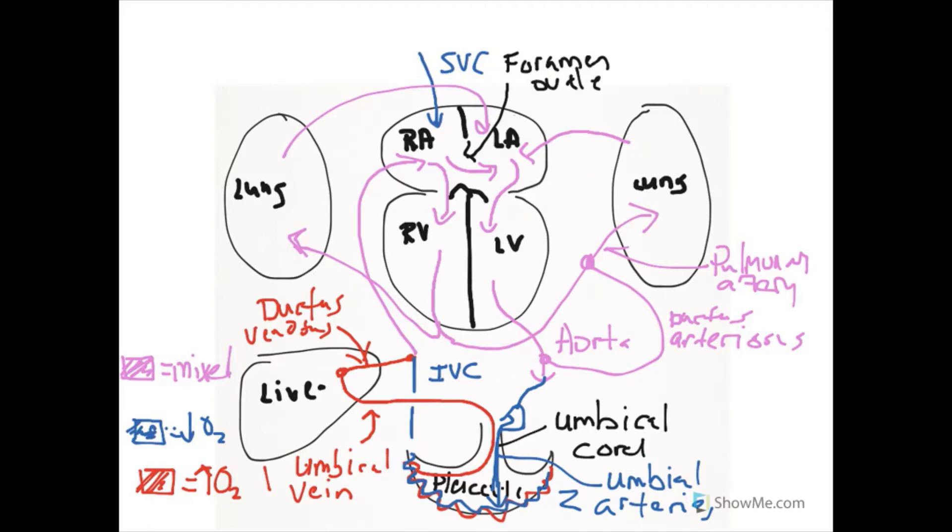The umbilical vein's ductus venosus shunt becomes the ligamentum teres of the liver in the adult. The remnant of the foramen ovale normally closes down. When it doesn't close, we call that a patent foramen ovale. After birth, the ductus arteriosus closes and becomes the ligamentum arteriosum, which you'll find associated with your pulmonary arteries and aorta on the adult heart.